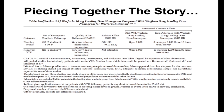This calculation is derived from absolute risk reduction, where number needed to treat is the inverse of absolute risk reduction. Absolute risk reduction equals the control event rate subtracted from the experimental event rate.